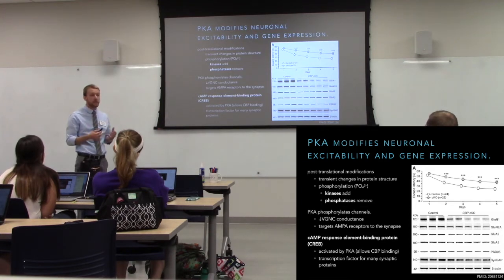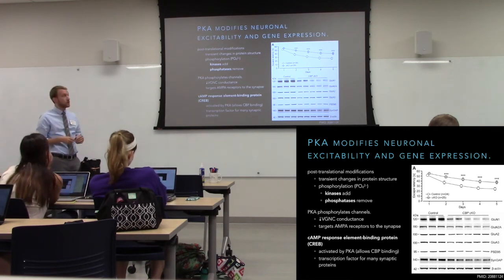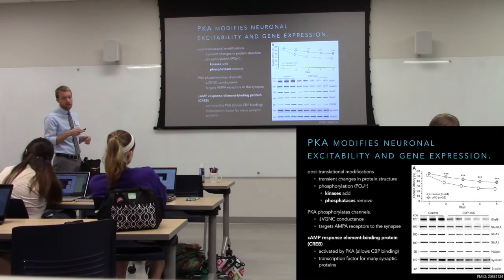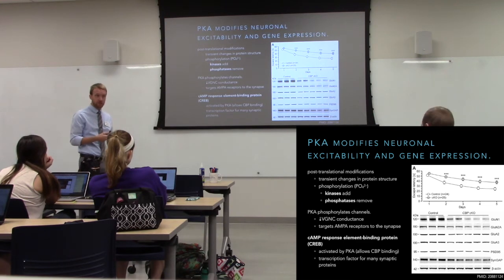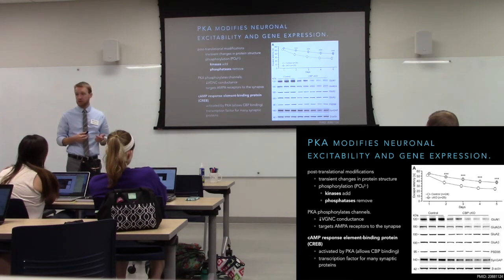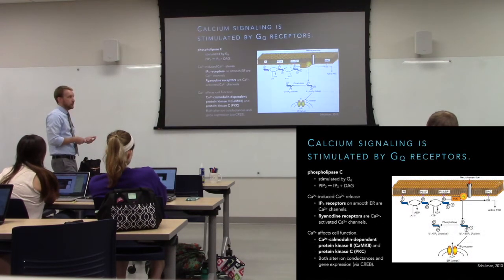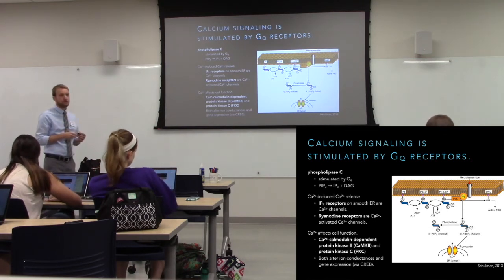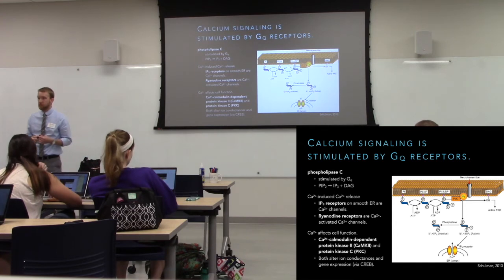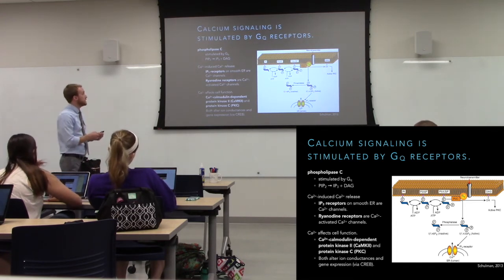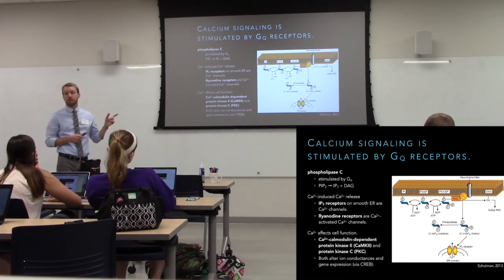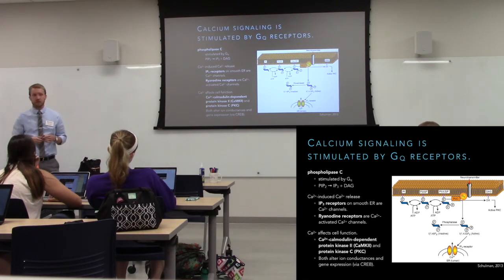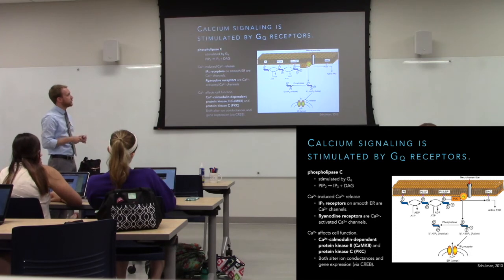Notice we're affecting the organism not over milliseconds but over days — much longer-lived effects when we're affecting gene expression. So metabotropic receptors, while slower and more complicated, can produce very meaningful changes in cell function. The other target is phospholipase C, which brings us to GQ.